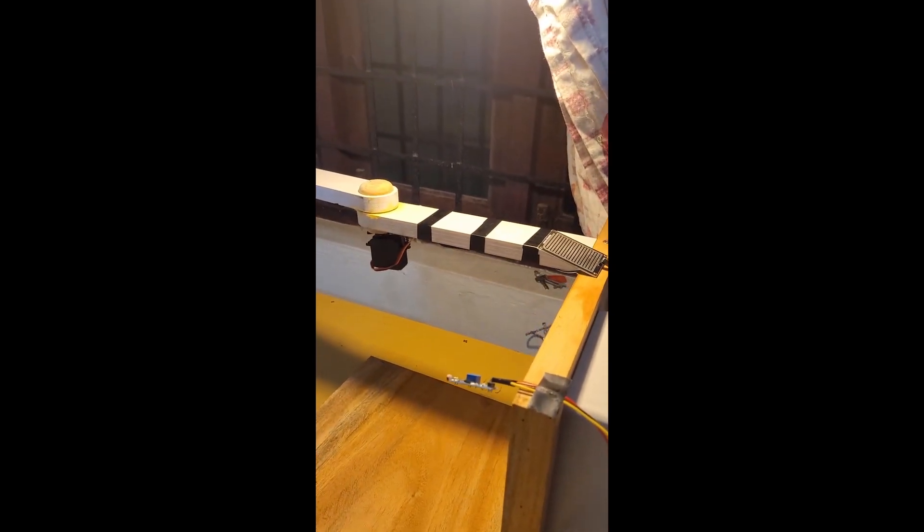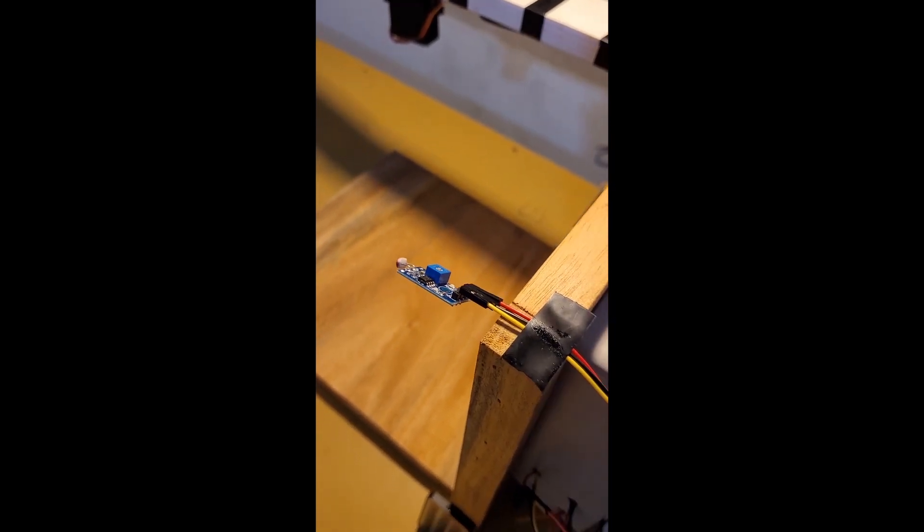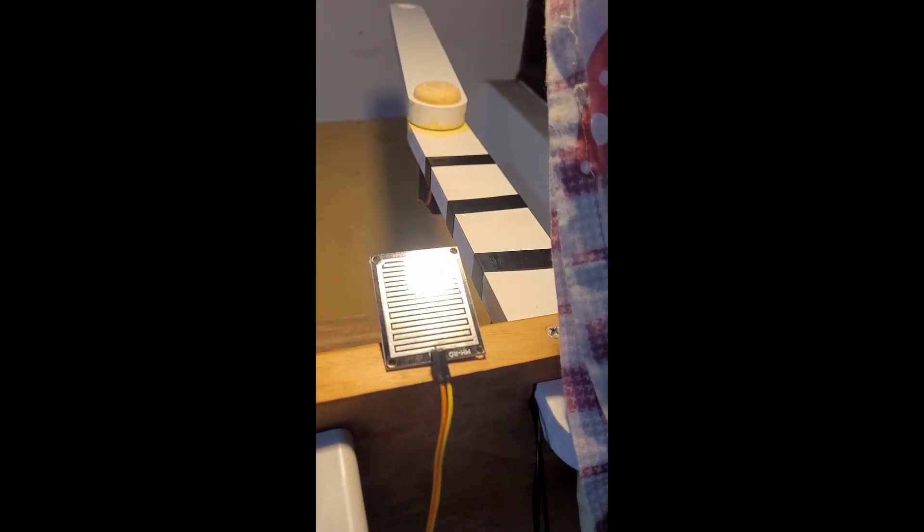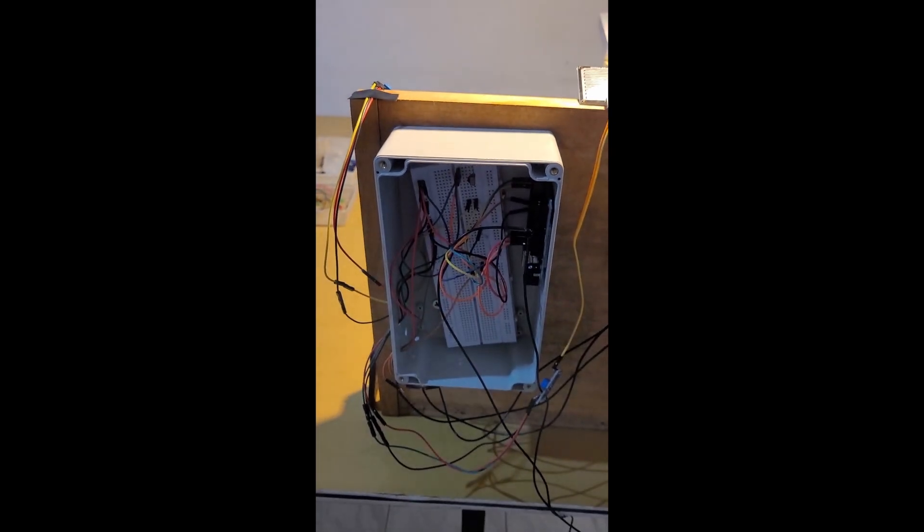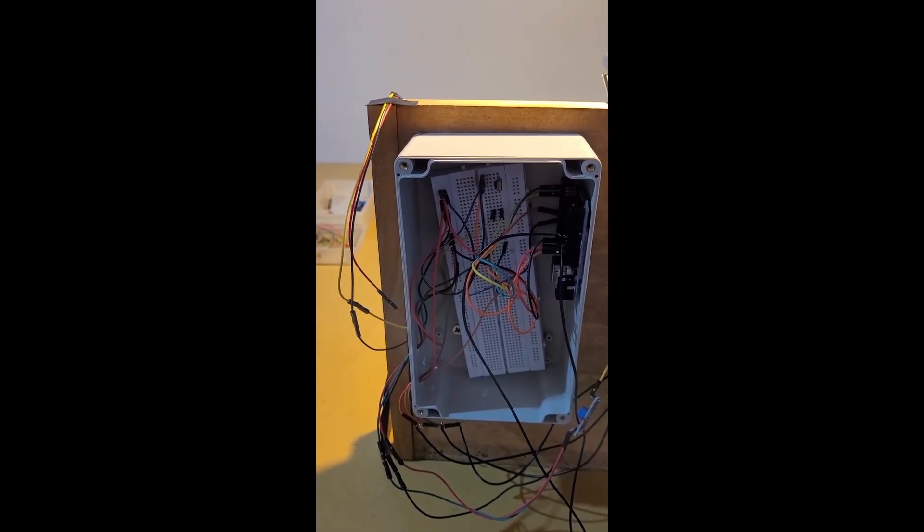This is the indoor system. And this is the rain sensor. Here is the control area which includes the microcontroller and the IR sensor.